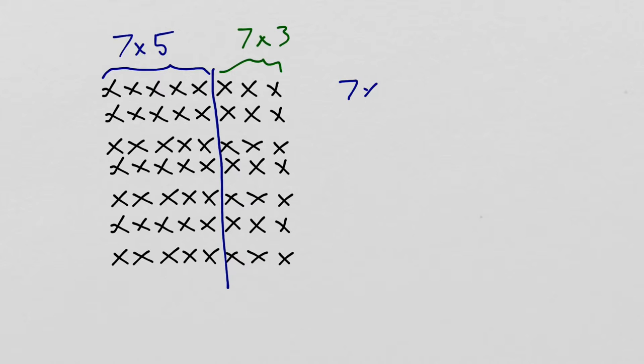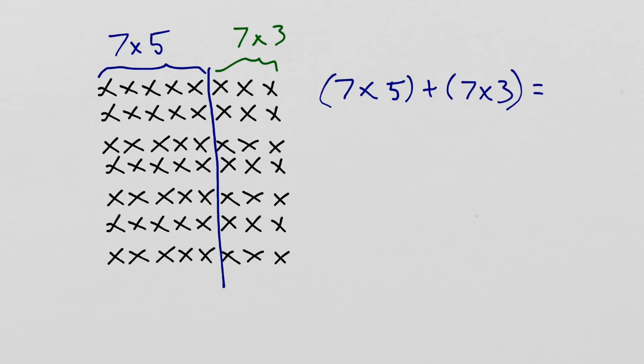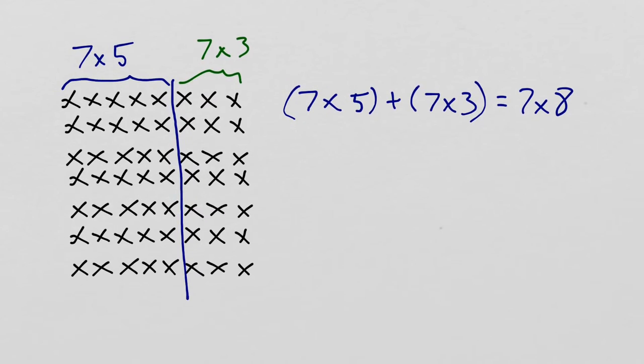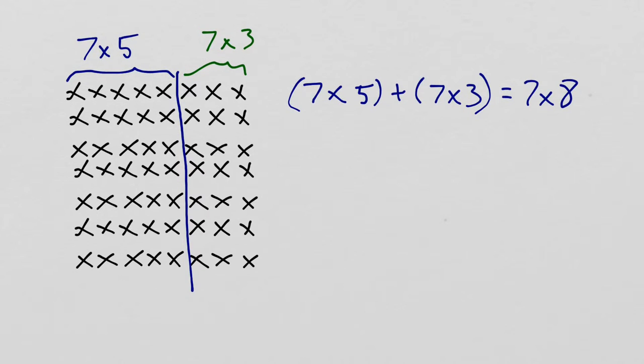Let's give ourselves a little workspace. If I have 7 times 5, and I add that to 7 times 3, I'm putting these in parentheses to tell me what to do first. It should give me whatever 7 times 8 is. How do we solve this? 7 times 5, I can count by 5s. That's the whole point of breaking it into a 5s fact. 5, 10, 15, 20, 25, 30, 35.